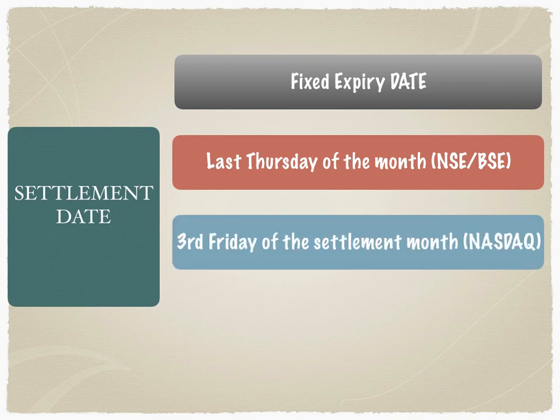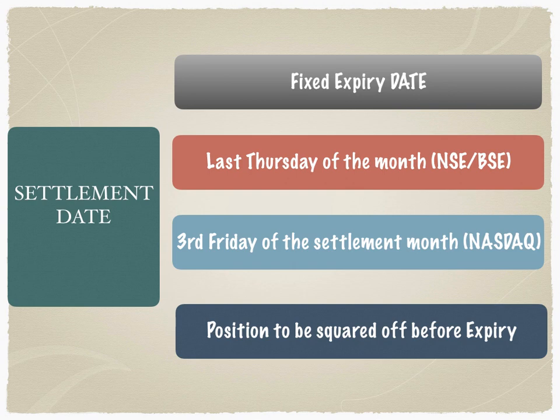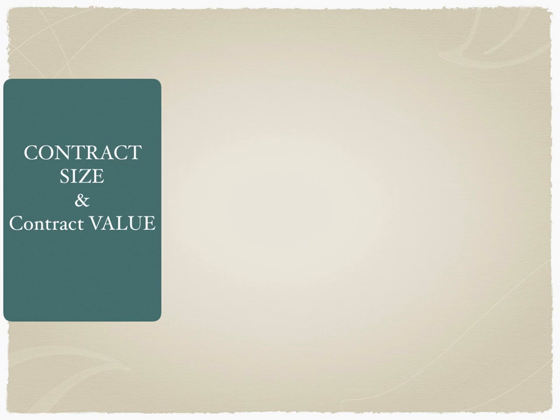For markets like Nasdaq, the third Friday of the settlement month is the settlement date, meaning the contract expires on that date. Expiry means the contract ceases to exist, so you cannot hold an outstanding position in a product that no longer exists. Therefore, positions must be squared off before expiry.